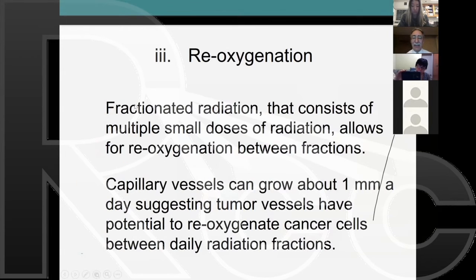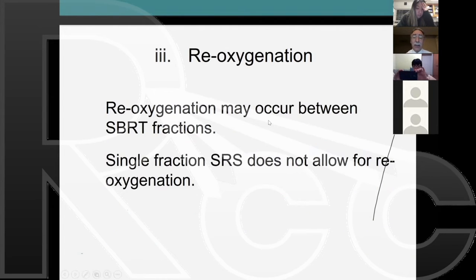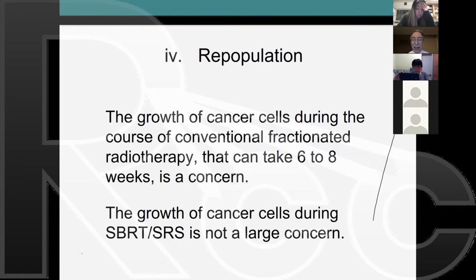Fractionated radiation, consisting of multiple small doses, allows reoxygenation to occur—a capillary can grow about a millimeter a day. Reoxygenation can happen with high dose radiation given in multiple fractions, but with a single dose there's no chance for reoxygenation to occur. The fourth R is repopulation, which is just the growth of cells. This takes six to eight weeks or months and is not a major concern for SBRT and SRS.